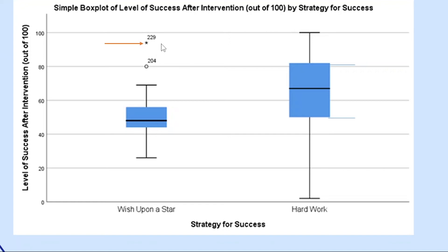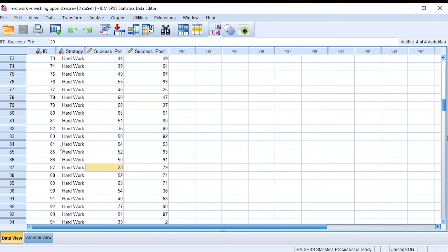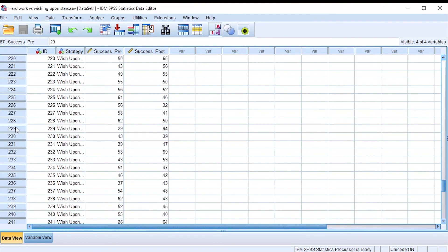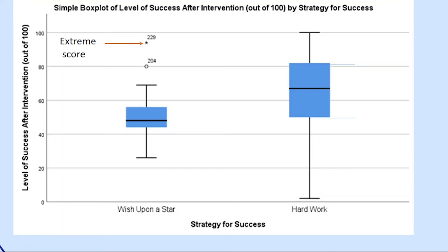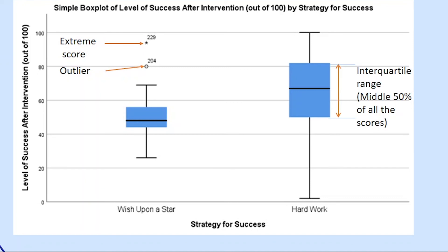Remember, the number after the label of an extreme score or outlier is the row in which the score is found. For example, this extreme score is found on row 229. Checking row 229, we find a success post-intervention score of 94 out of 100. SPSS helps you identify extreme scores which you can either modify if you made a data entry mistake, or highlight in your analysis. The circle represents an outlier on row 204.